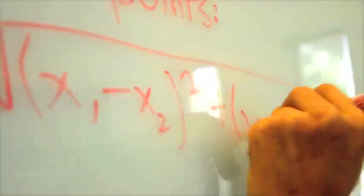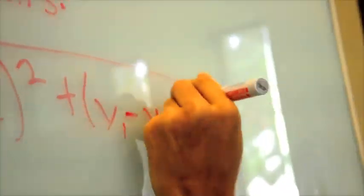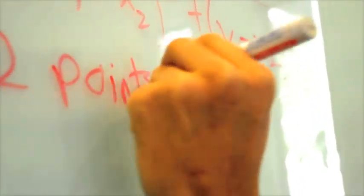Distance is the square root of x1 minus x2 squared plus y1 minus y2 squared. It is based on Pythagoras' theorem, only requires two points, and is measured in units.